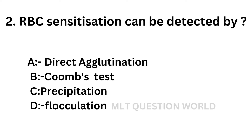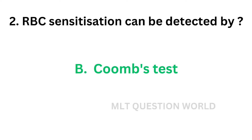Question number 2: RBC sensitization can be detected by — option A: Direct agglutination, option B: Coombs test, option C: Precipitation, option D: Flocculation. The correct answer is option B, Coombs test. RBC sensitization can be detected by the Coombs test, also known as the anti-human globulin test.